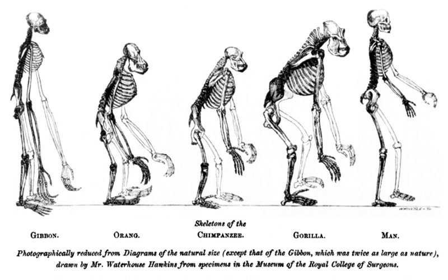The extended argument on the ape brain, partly in debate and partly in print, backed by dissections and demonstrations, was a landmark in Huxley's career. It was highly important in asserting his dominance of comparative anatomy, and in the long run more influential in establishing evolution amongst biologists than was the debate with Samuel Wilberforce. It also marked the start of Owen's decline in the esteem of his fellow biologists.